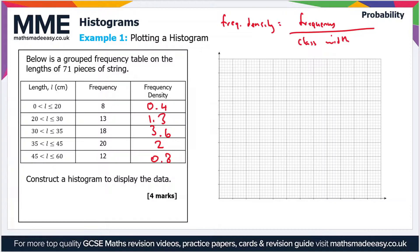We're plotting frequency density against the classes, so we need suitable scales to do both. The smallest value is 0.4 and the largest is 3.6, so we need a scale that's going to cover everything from 0 to 4.